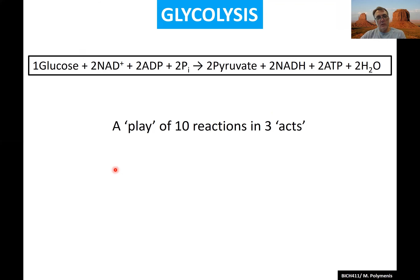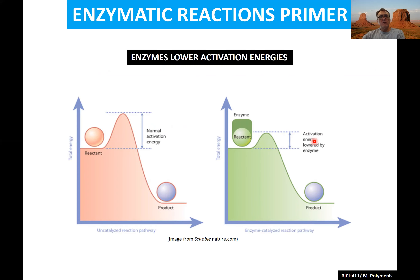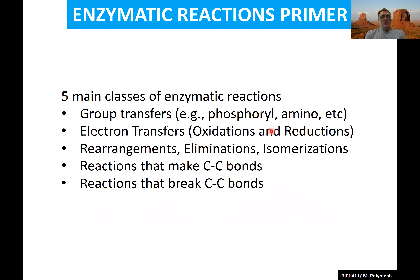Glycolysis from glucose to pyruvate is a series of 10 reactions — like a play with 10 actors (the enzymes) broken into three acts. Before describing the three phases, let's remind ourselves what enzymes do: reactants and products have fixed energies, but to get to products you almost always need to overcome an activation energy barrier. Enzymes don't change the reactants or products — all they do is lower the activation energy.